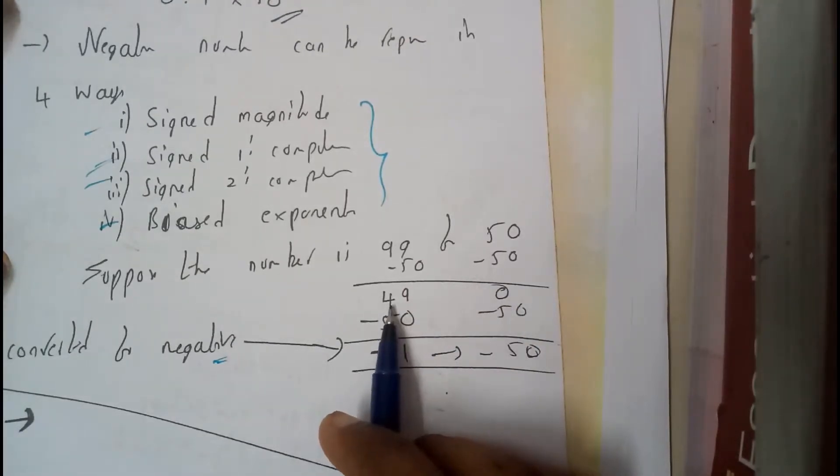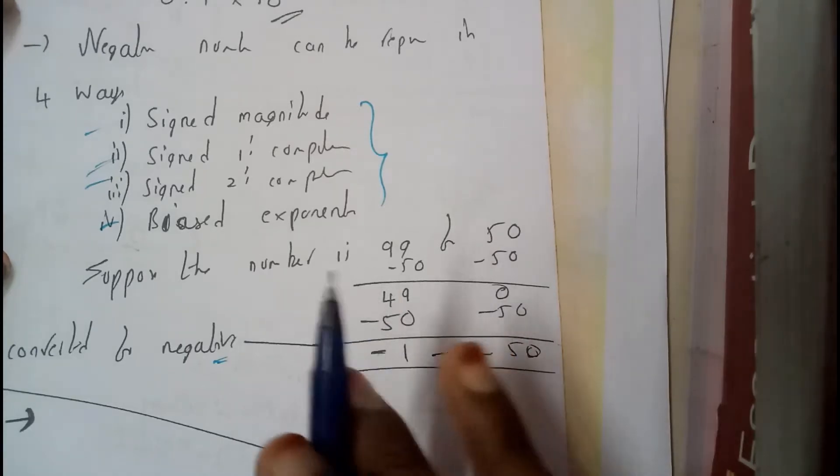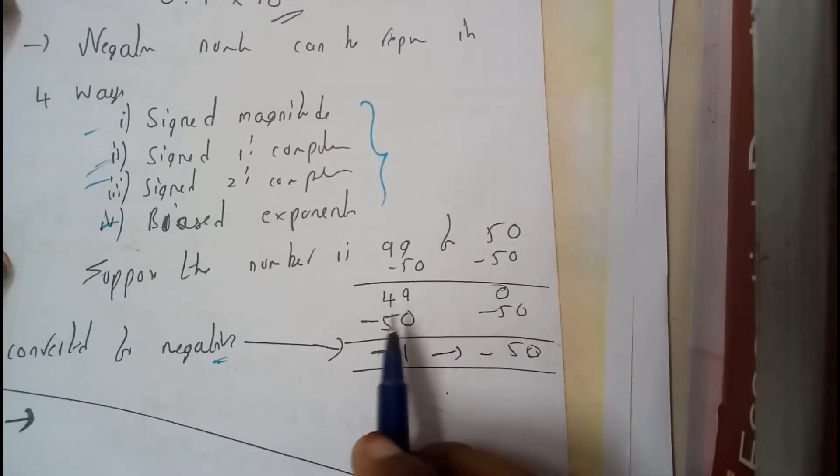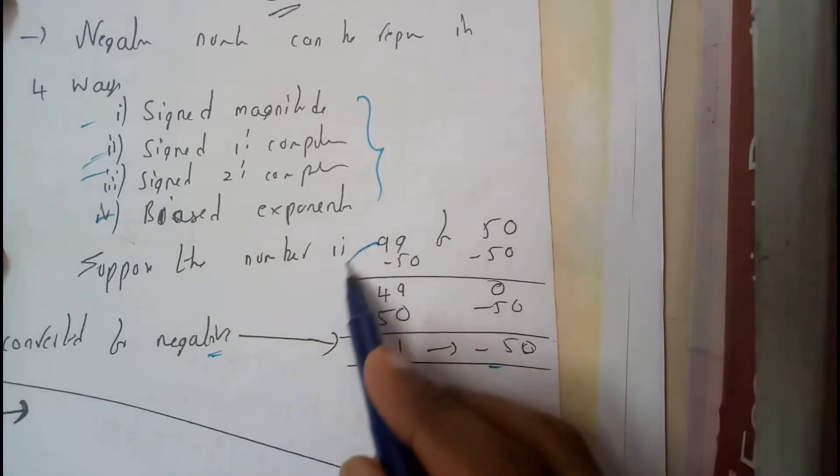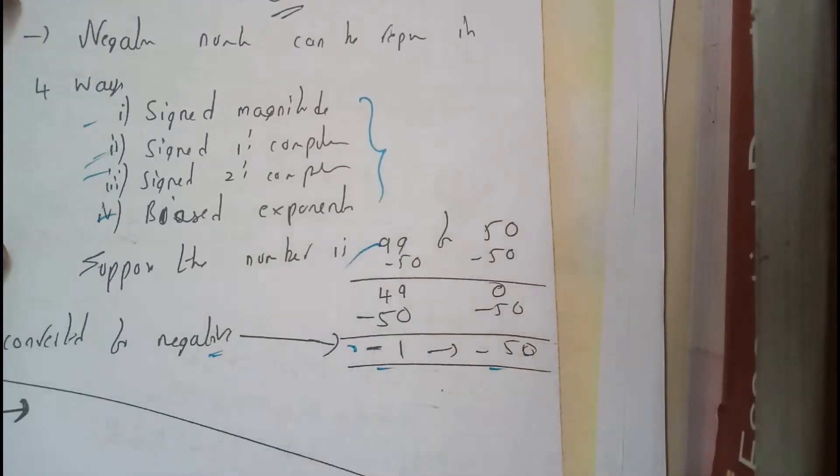This 49 plus 1 is nothing but 50. So again subtract 50, 50. So here you got minus 1 to minus 50. This is the negation form of these numbers. Like that also you can convert.